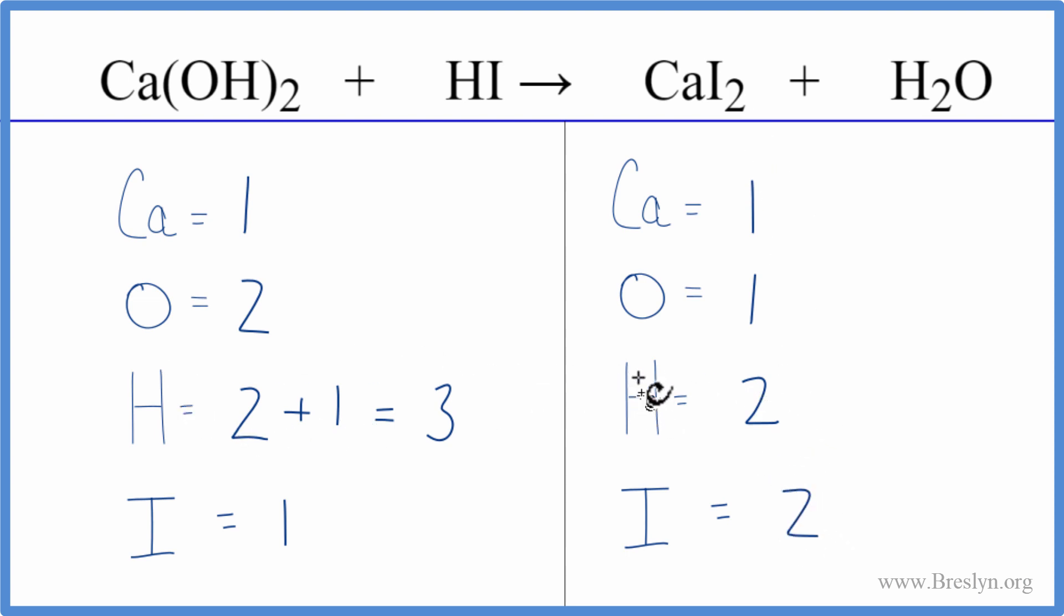Let's leave the hydrogens till last. Let's fix the iodine and see how that works out. If we put a two in front of the HI, the hydroiodic acid, that means one iodine times the two. That'll give us two. Those are balanced.